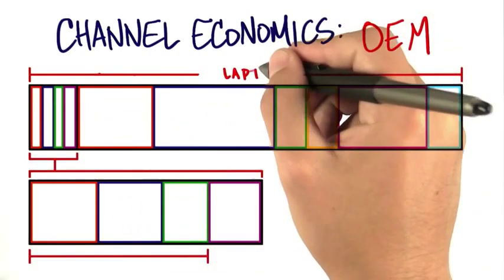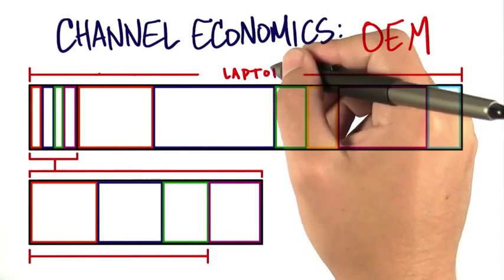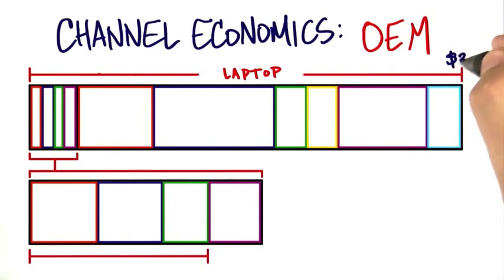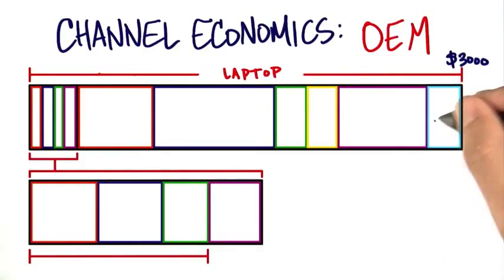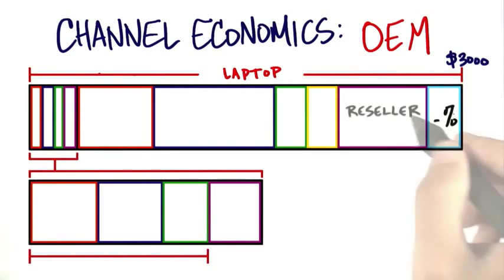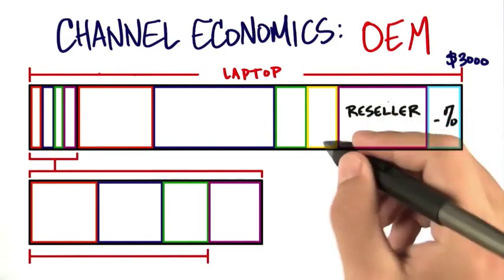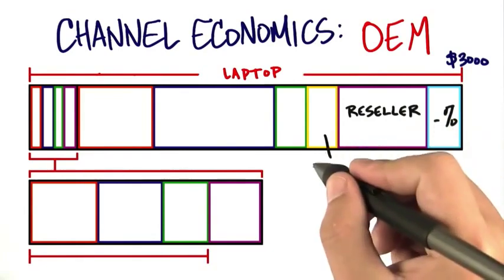Let's assume this diagram on the top is a laptop computer sold through a computer reseller channel. This laptop sells for $3,000. Like any other channel, the end user assumes they get a discount, the reseller is taking a profit, but that reseller was actually buying these laptops from a master distributor.